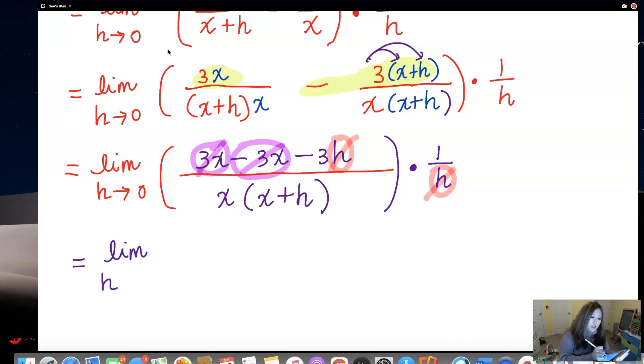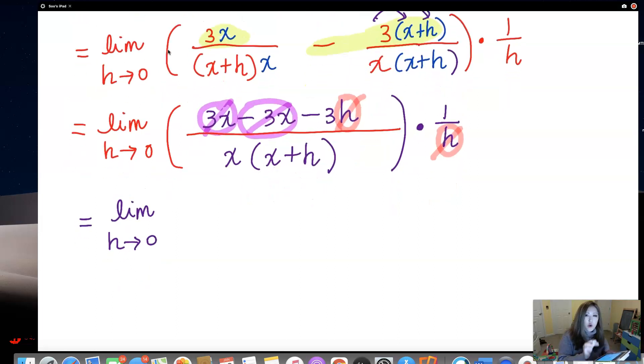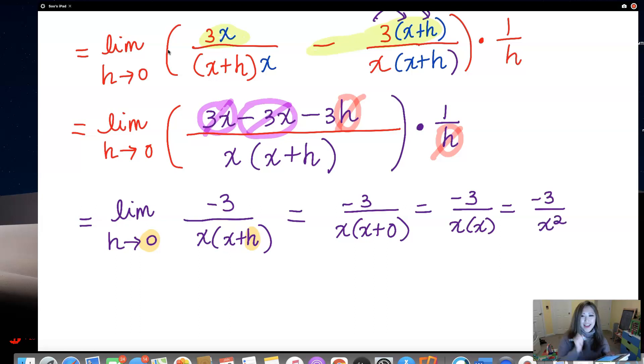All righty, we're doing good. So limit as h approaches 0 of, what's the only thing left on the numerator? Negative 3. What's the, well the denominator is still x times x plus h. That's simple enough. It's time for us to plug in h equals 0. So wherever you see h, you're going to plug in 0. So negative 3 over x times x plus 0, which gets simplified to negative 3 over x times x. Well, x times x, we should write it as x squared. Yay.